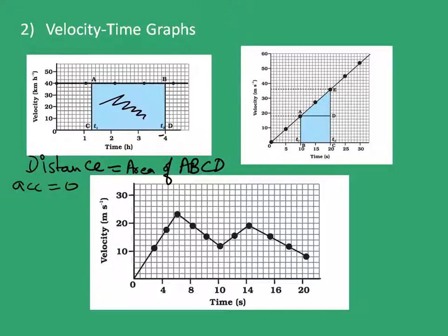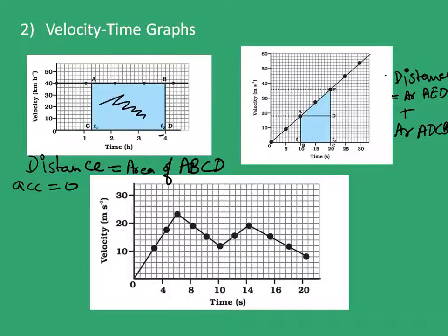In the second graph, the distance traveled is found by finding the area AECB — that is the area under the curve. This figure is also called a trapezium. To find the area of trapezium AECB, we divide it into two parts: triangle AED and rectangle ADCB. The distance traveled equals area AED plus area ADCB, which is the whole region shaded in blue.